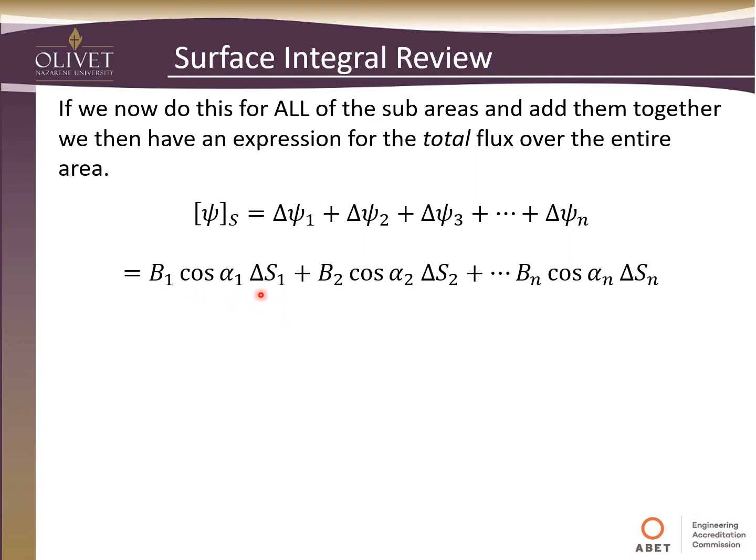Of course, this would look like this where we have n number of little areas. So we do that calculation for each and add them up and equal to the total flux over the area. Of course, we can plug back in our definition for the flux and we find it for each subscript. And we can use some mathematical notation then to show this as a summation.